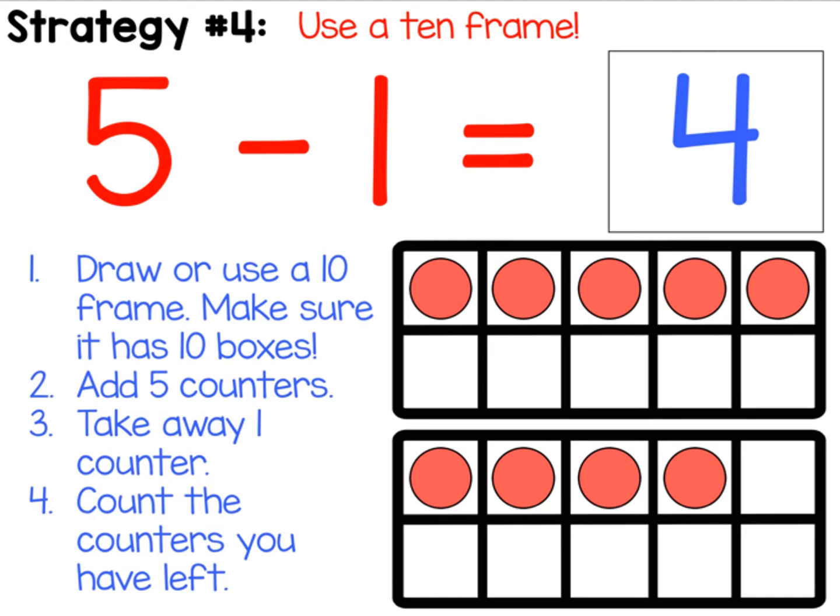Now for five minus one you would add five counters. It could be the circles like in the picture, pieces of cereal, toys, five of anything. Then when it says minus one, you're going to take one away and then count how many counters you have left.